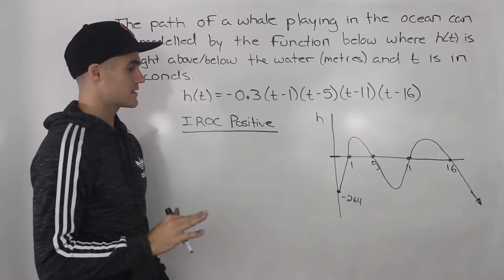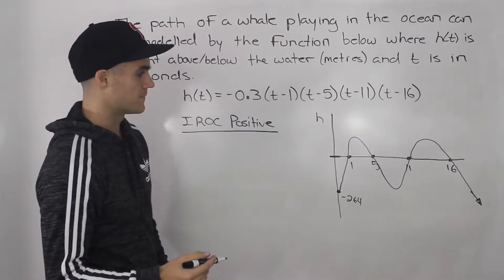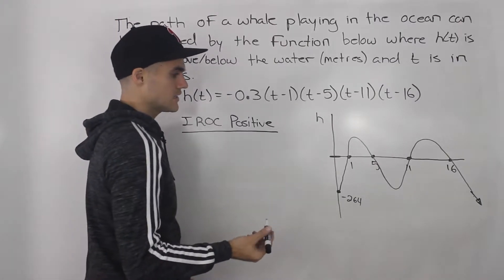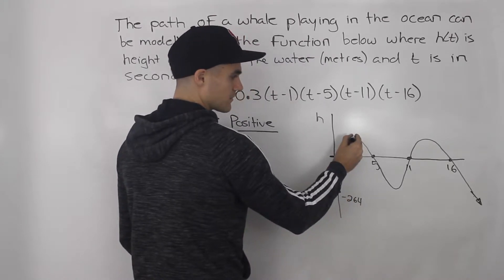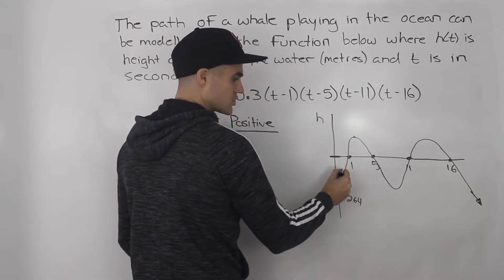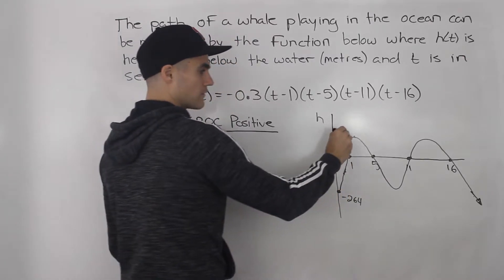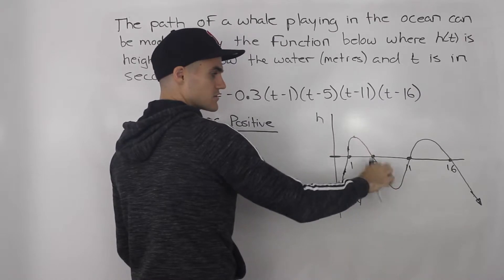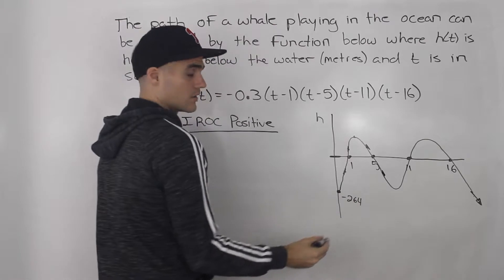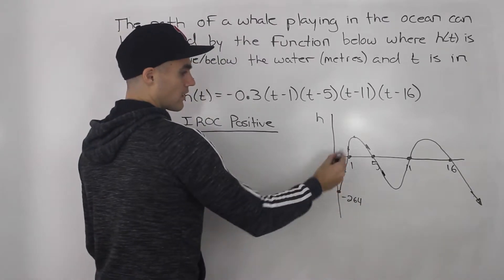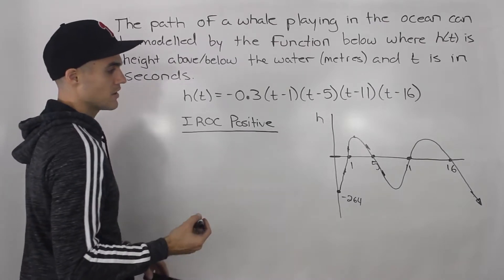Part b asks us to estimate the intervals where the instantaneous rate of change is positive. The instantaneous rate of change is positive whenever the function is increasing, because the slope of the tangent at any of those points is positive. When the function is decreasing, the instantaneous rate of change is negative. So we need to find where the function is increasing.